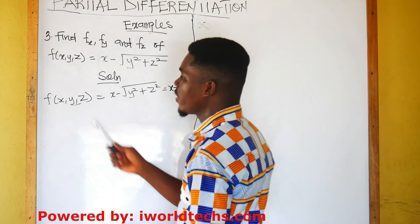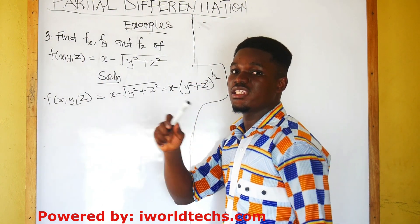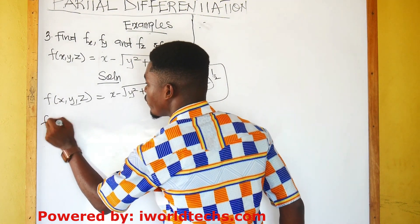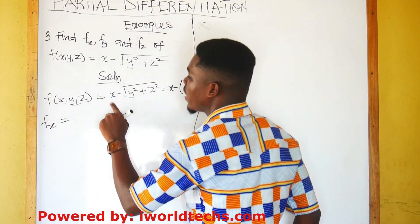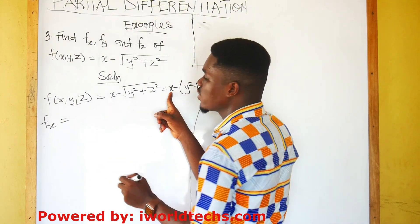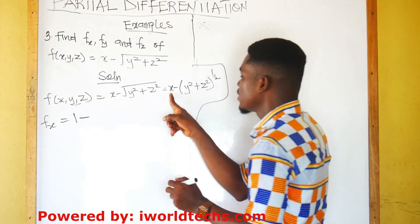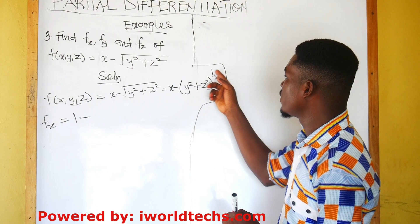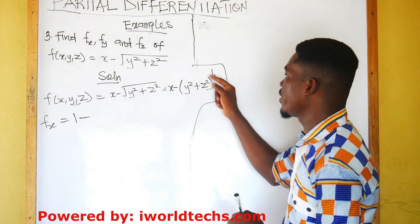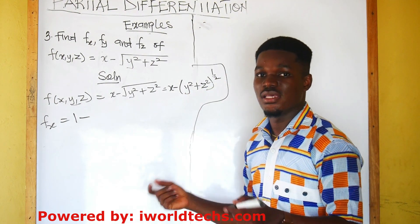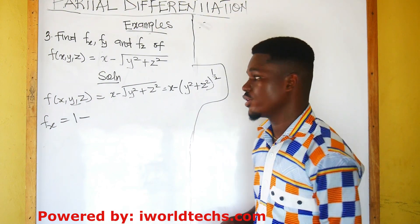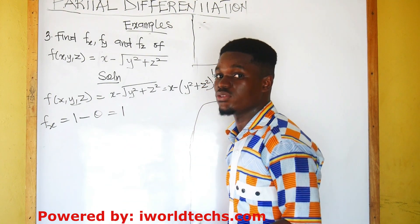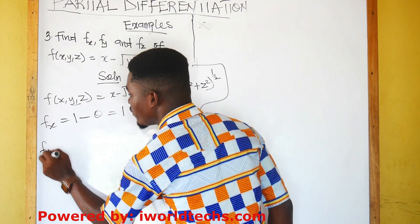Let's begin with the partial derivative of this function with respect to x. This means we hold y and z constant. So f subscript x is given by the partial derivative of x with respect to x, which is 1. So y and z are held constant, meaning the partial derivative with respect to x is 1.